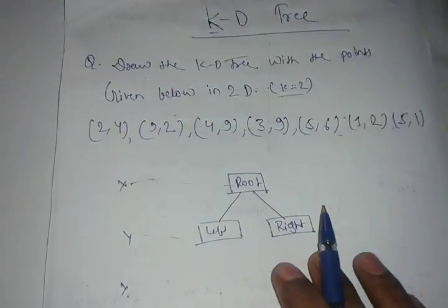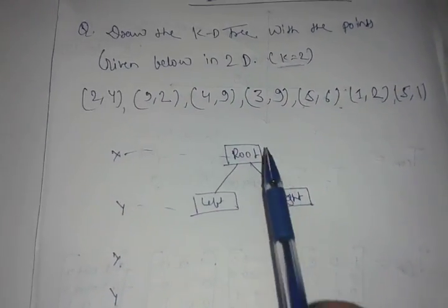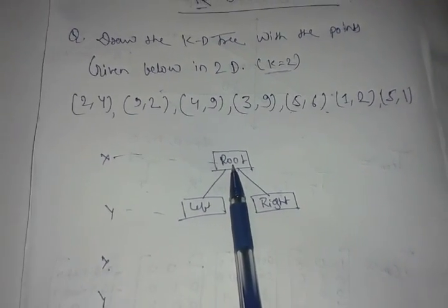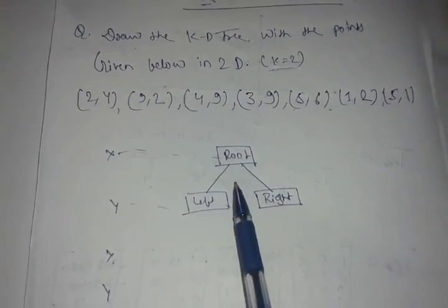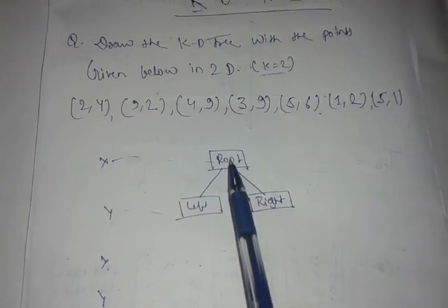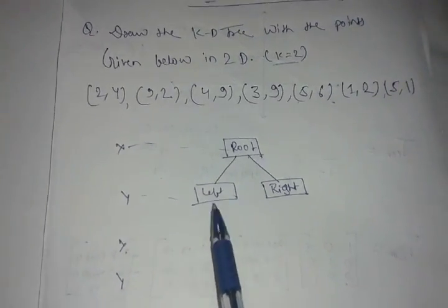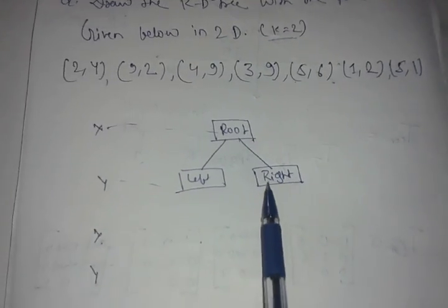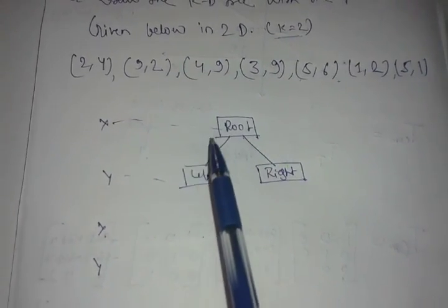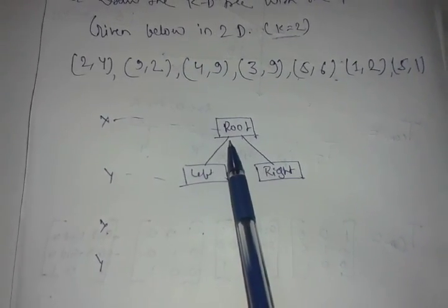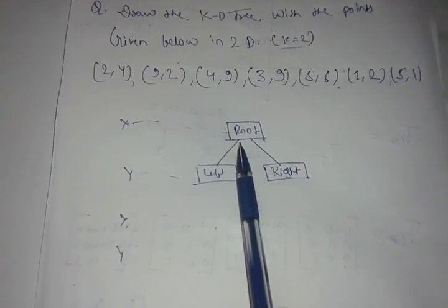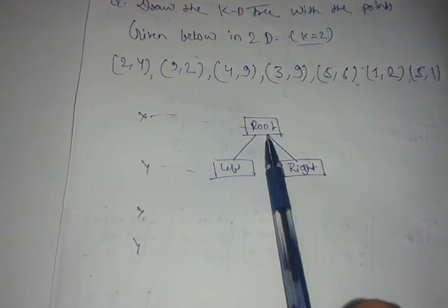First, remember two things. First thing is whatever node you are going to insert in the tree, you check it from the root node and traverse downwards. If you check with every node, if the inserting node is less than this node, then you come on the left side.